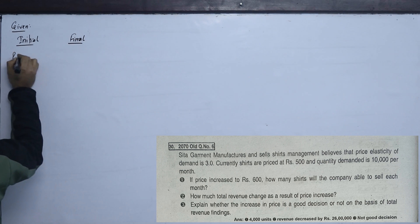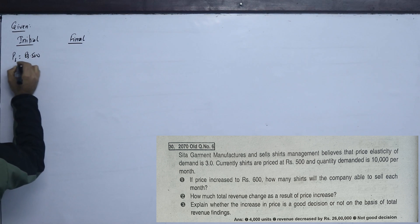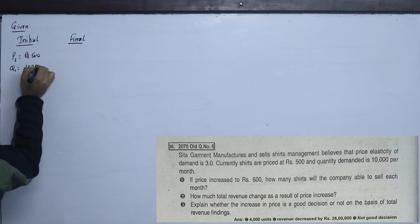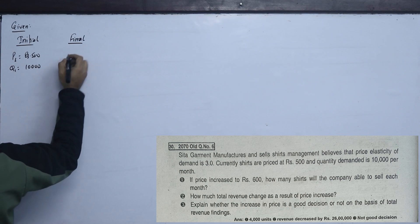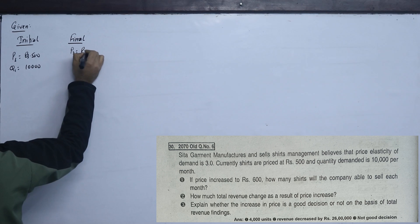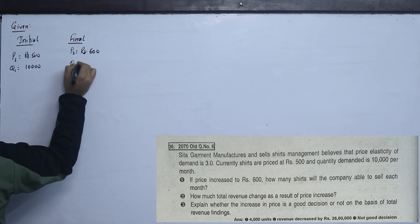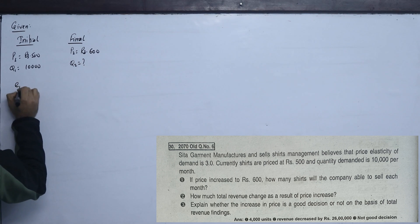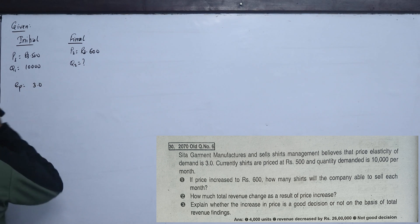So we assign P1 = Rs. 500 and Q1 (the initial quantity demanded) = 10,000 units per month. The new price P2 = Rs. 600. Setting up the elasticity equation: minus of Q2 equals to Ep = 3.0.